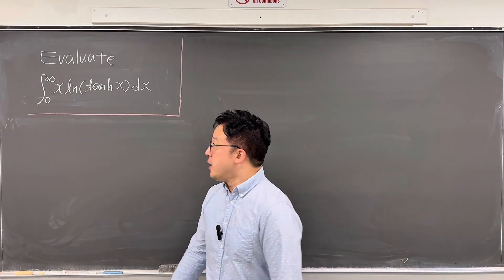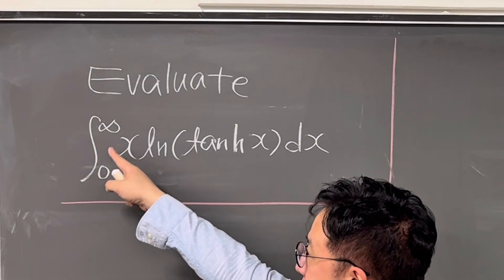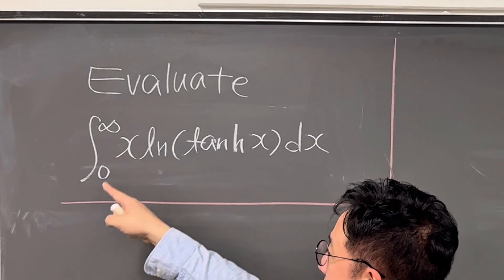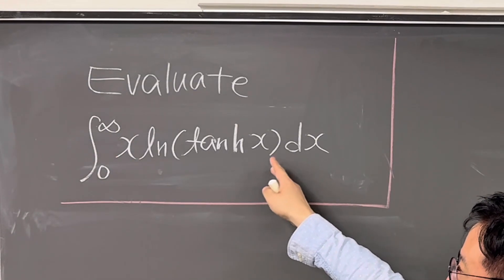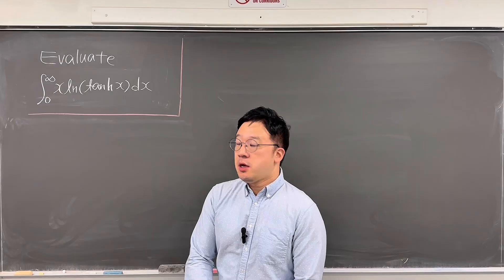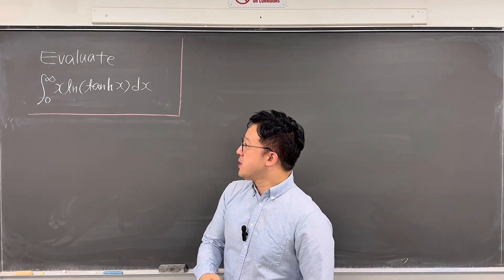Okay, here's the question. The question is to evaluate the integral from 0 to infinity of x times ln(tanh x) dx. At the end, we'll get Riemann's zeta function.